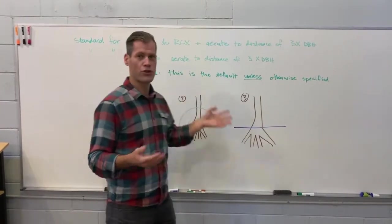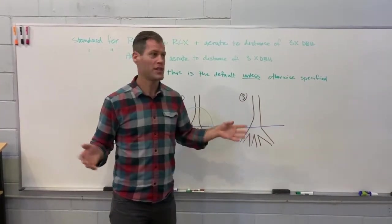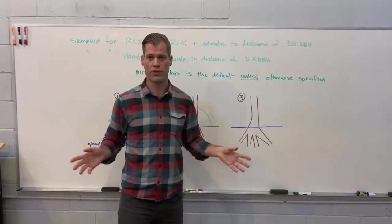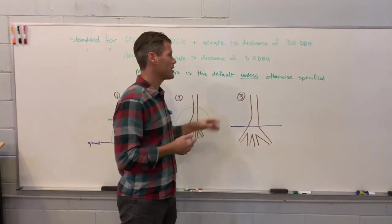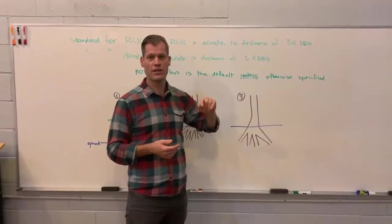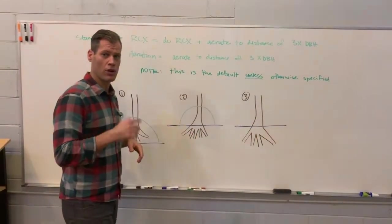Or another example might be for a mature oak, maybe we go out 15 feet on aeration, which would be more than three times DBH. But if nothing is specified, these are the standards, and if you think it's a problem, call somebody.